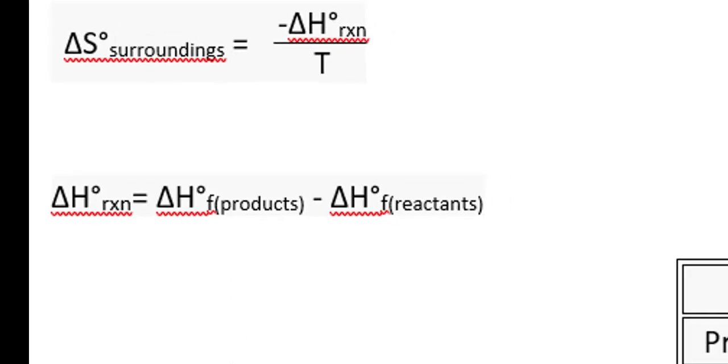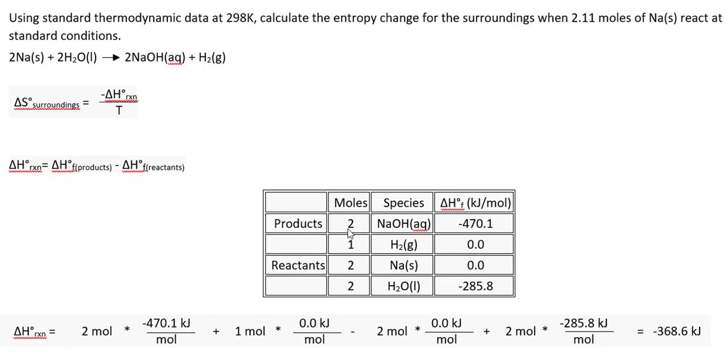We look up these values in a table, outline the moles of the reactants and products, and substitute those values into this equation. And the delta H for this reaction is negative 368.6 kilojoules.